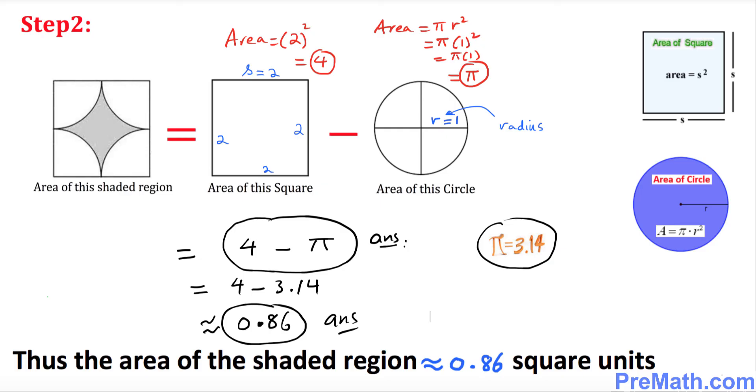Thus, the area of the shaded region turns out to be approximately equal to 0.86 square units. Thanks for watching and please subscribe to my channel for more exciting videos.